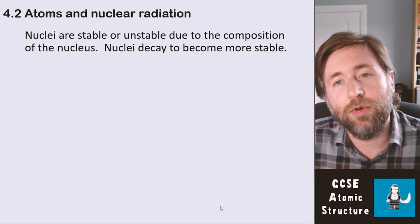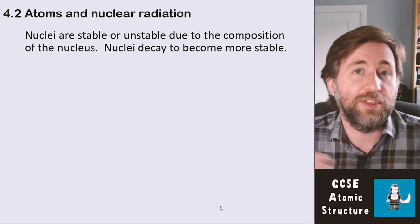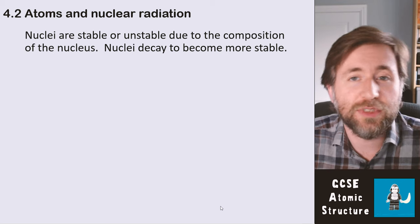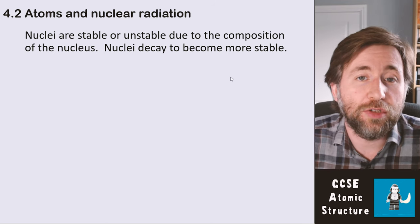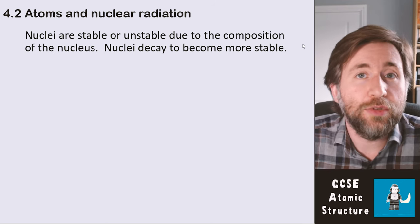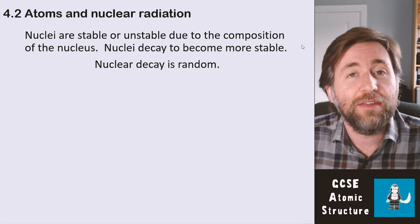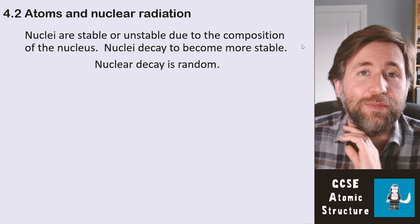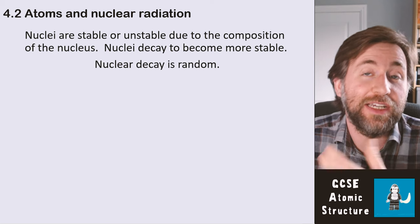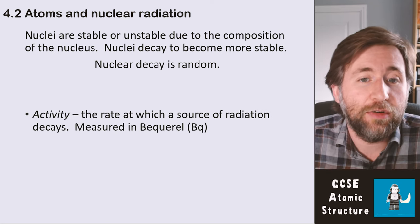Nuclei are stable or unstable — there's a whole scale of stability; some are more stable, some are less stable, and that's due to the composition of the nucleus. Nuclei decay to become more stable. That decay is completely random: there's no way to predict it and there's no way to influence it.